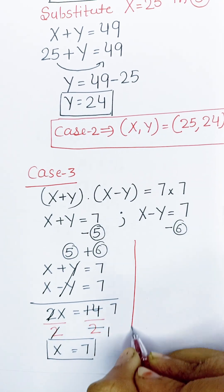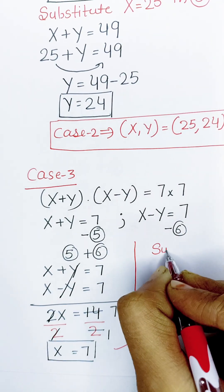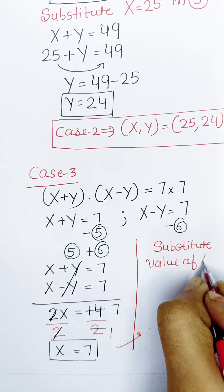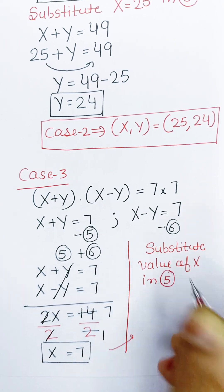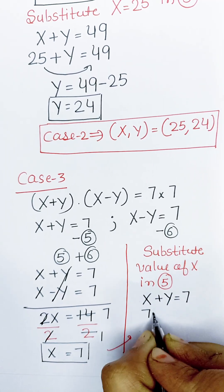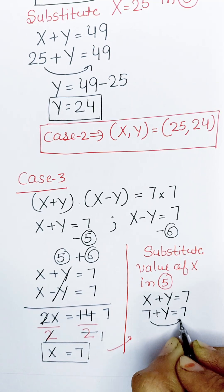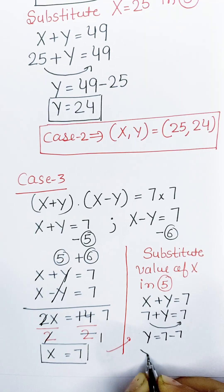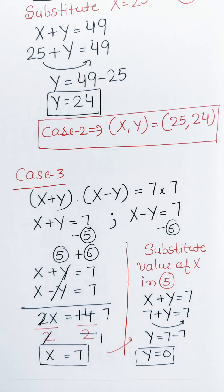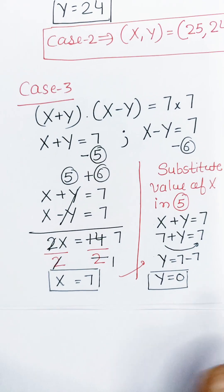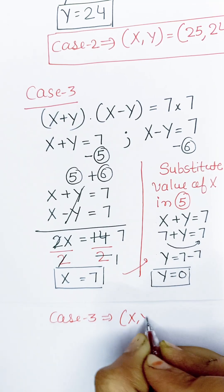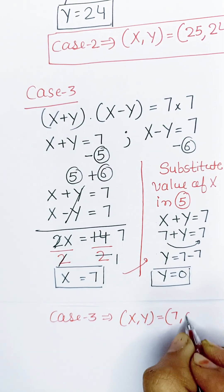Now substitute x equals 7 into equation 5. Equation 5 is x plus y equals 7, so 7 plus y equals 7. Taking 7 from the left to the right: y equals 7 minus 7, giving y equals 0. That means from Case 3, x equals 7 and y equals 0.